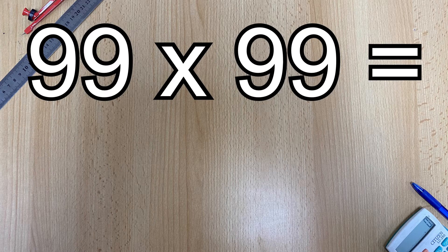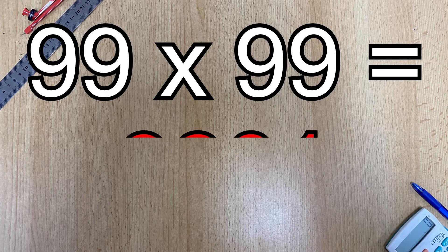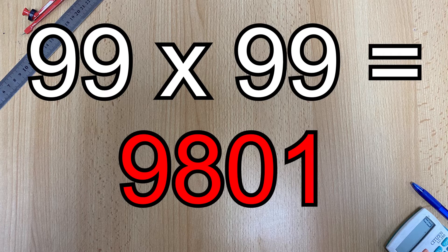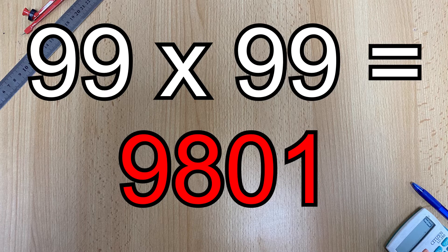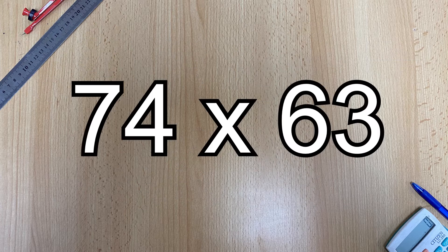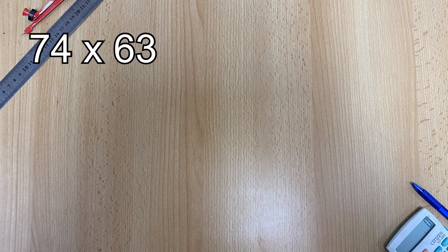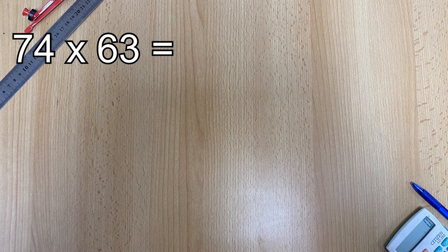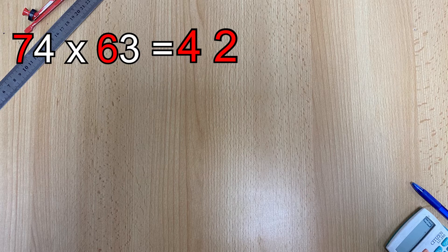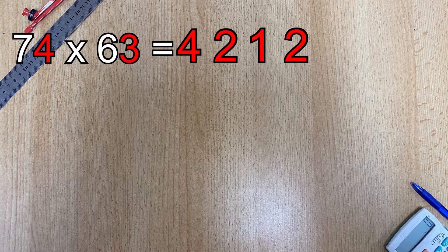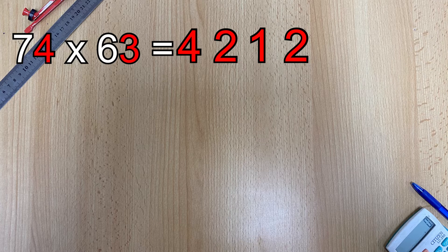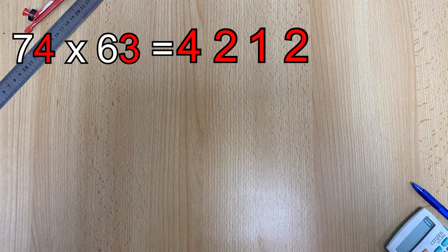When multiplying two two-digit numbers together the maximum answer you can get is 9801 which is a four-digit number. This fact is important to understand because in this third example after we've done the first stage 7 times 6 equals 42, 4 times 3 equals 12, we already have a four digit number after the first stage and we have no gap in the middle.